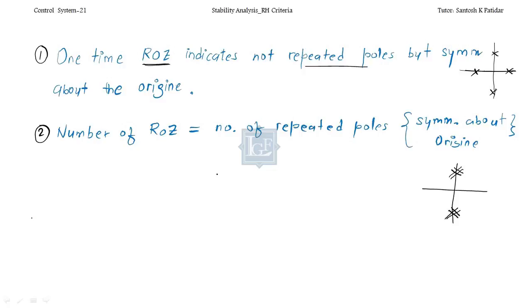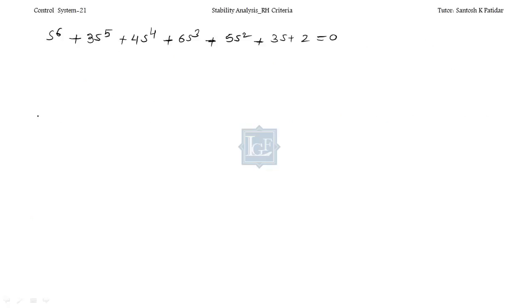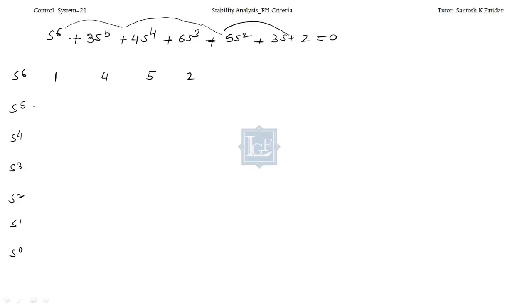Let me take that example — I also gave this as homework. I will frame the RH table for a degree-5 polynomial: rows S^5, S^4, S^3, S^2, S^1, S^0. The coefficients are: 1, 4, 5, 5, 2 for S^5 and S^4; then 4, 2 for S^3; then the next row gives 3, 6, 3, 0. Computing: 3×4 − 6 divided by 3 gives 2, 4, 2 for the S^2 row.